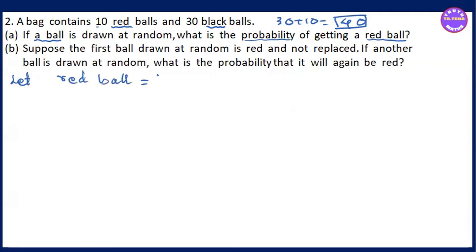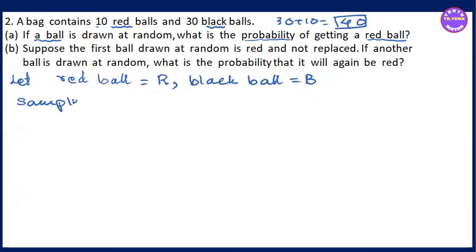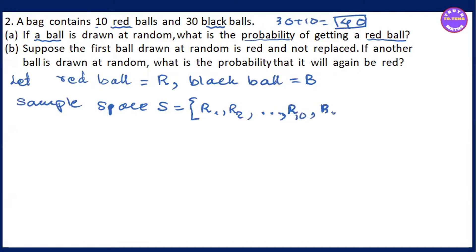The red ball is labeled R. This is R1, R2, and so on. This is B1, B2, B30. Now let's see the sample space S: R1, R2, ... R10, B1, B2, and so on B30.